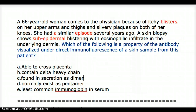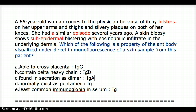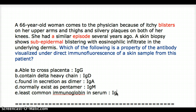We've identified the disease as bullous pemphigoid, and we must know that bullous pemphigoid is associated with IgG. Looking at the answer options: able to cross the placenta — that's IgG. Contains delta heavy chain — that's IgD. Present in secretions as a dimer — that's IgA. Normally exists as a pentamer — that's IgM. Least common immunoglobulin in serum — that's IgE.